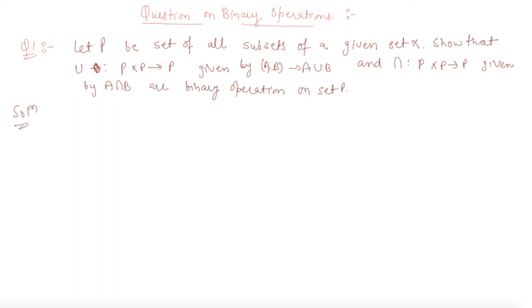Since union operation U carries each pair (A,B) in P × P to a unique element A ∪ B, I hope you are aware about union and intersection, U is a binary operation on P.